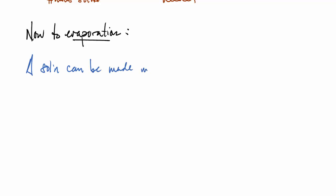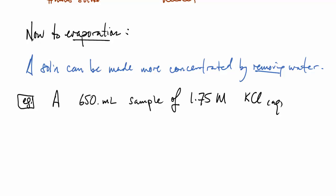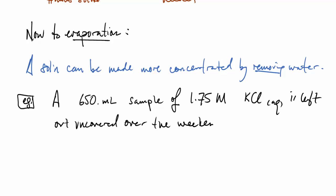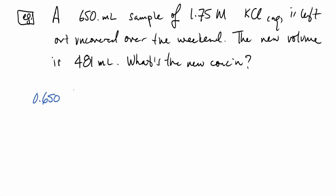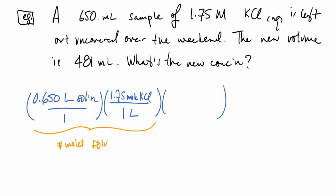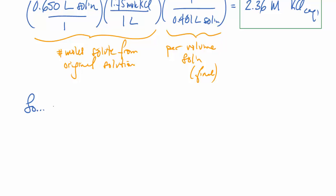For evaporation, you can make a solution more concentrated by removing water. Consider a 650 mL sample of 1.75 molar potassium chloride solution left uncovered over the weekend, reducing to a new volume of 481 mL. We calculate the original moles of solute using 650 mL and 1.75 M, then divide by 0.481 liters, giving a new concentration of 2.36 molar KCl — more concentrated, as expected.